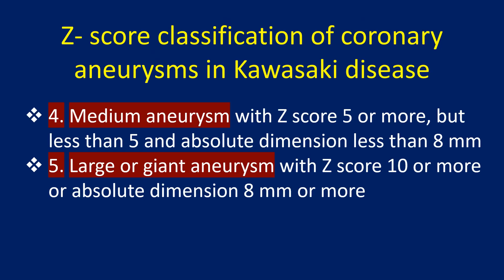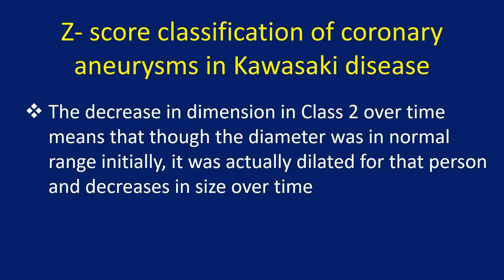Fourth, medium aneurysms with SED score 5 or more but less than 10, and absolute dimension less than 8 mm. Fifth, large or giant aneurysms with SED score 10 or more, or absolute dimension 8 mm or more. The decrease in dimension in class 2 over time means that though the diameter was in normal range initially, it was actually dilated for that person and decreases in size over time.